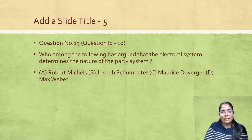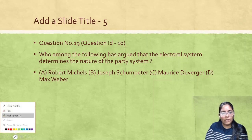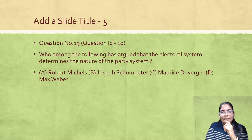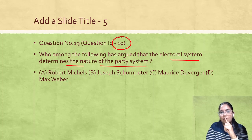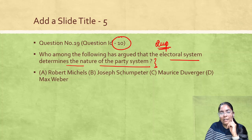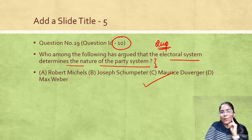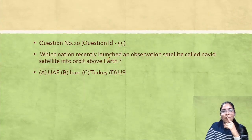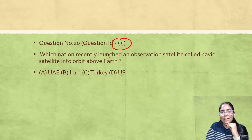Question ID 10: Who among the following argued that the electoral system determines the nature of the party system? The correct answer is obviously Duverger. Duverger's connection with party system and electoral system is a very well-known and easy-to-remember name.